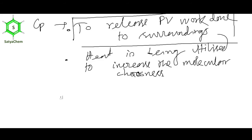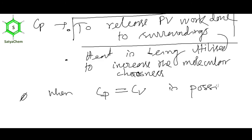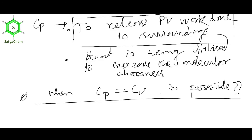Now I am going to give you another problem to think about: when is Cp equal to Cv? At what unique condition can Cp = Cv? Try to think about this. I will explain this in my next video. Today I will end here.